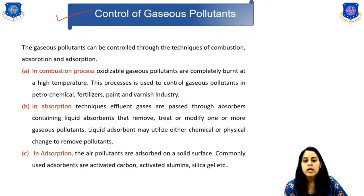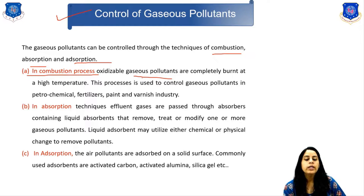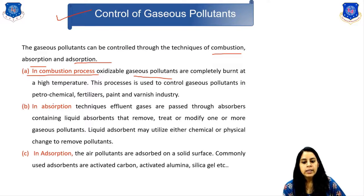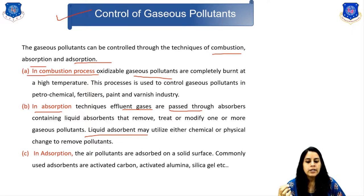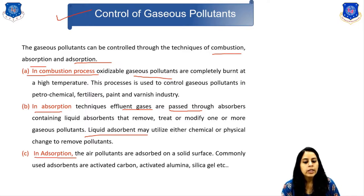The next topic is the control of gaseous pollutants. There are three methods: combustion, absorption, and adsorption. In the combustion process, oxidizable gaseous pollutants are completely burned at high temperature; this process is used in petrochemical, fertilizer, paint, and varnish industries. In absorption, effluent gases are passed through a liquid absorbent that removes or modifies gaseous pollutants, utilizing either chemical or physical changes. In adsorption, air pollutants are adsorbed onto a solid surface; commonly used adsorbents are activated carbon, activated alumina, silica gel, and others.